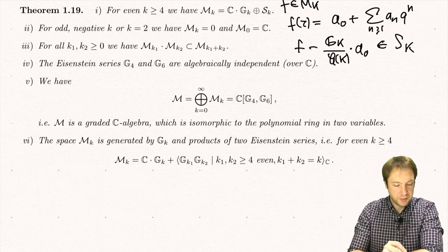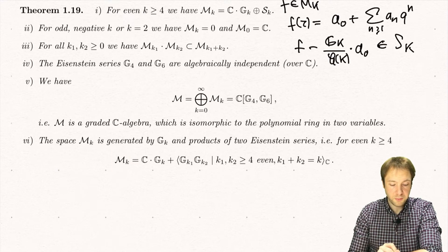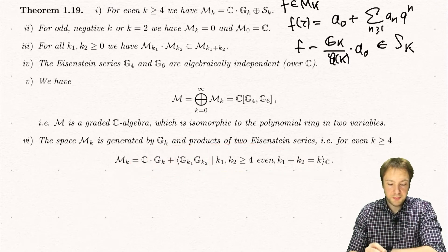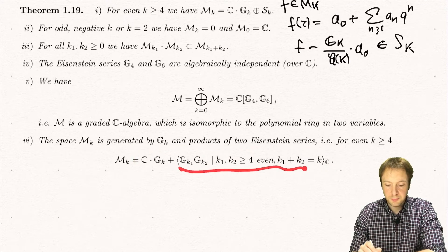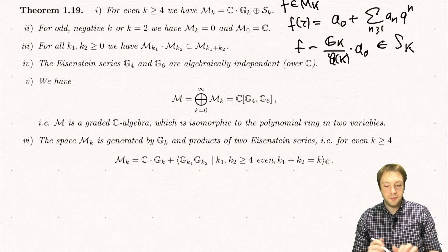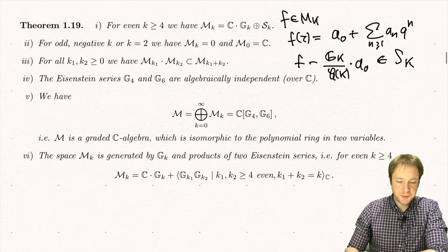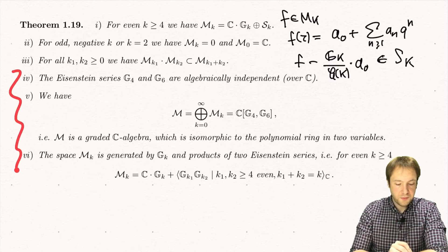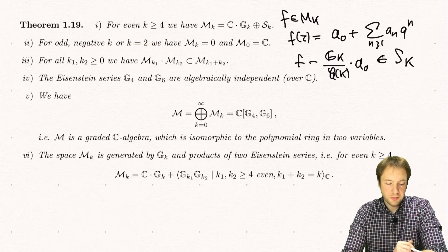Another statement is that M_k is generated by the Eisenstein series of weight k and products of just two Eisenstein series whose weights add up to k. This is not a basis — there are some relations among these — but every modular form can be written as a linear combination of products of at most two Eisenstein series. For these statements I give some references in the lecture notes; they follow using simple complex analysis tools.